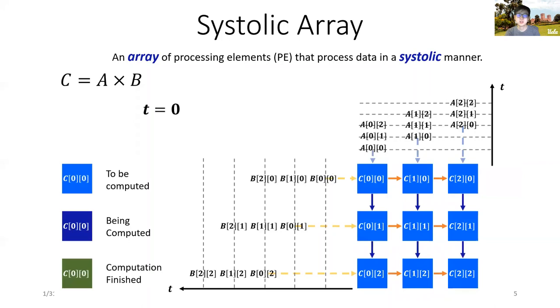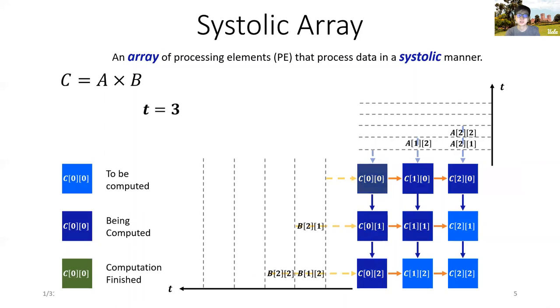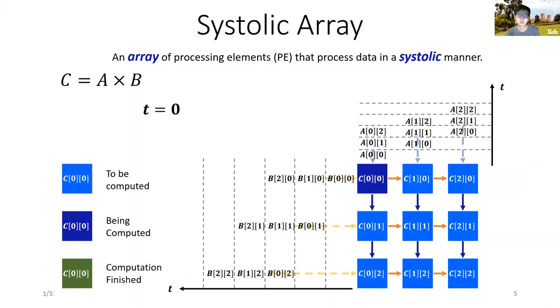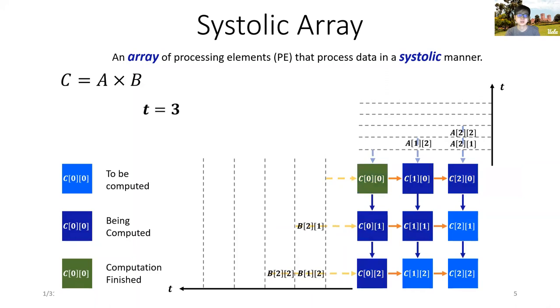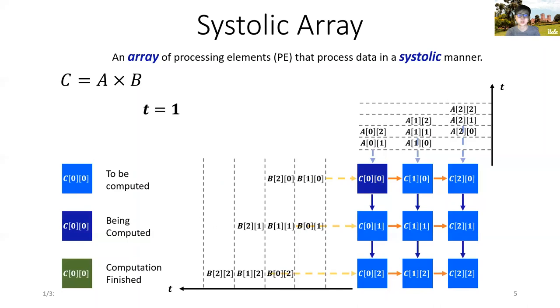Then, at each cycle, the data of matrix A and B are injected into the array in a rhythmic manner. Each PE receives the data of matrix A and B from neighbors, performs the local computation to update the elements of matrix C, and passes the operand data to the other neighbor PEs. Finally, when all the PEs finish the computation, the final results of matrix C are drained out from the array.